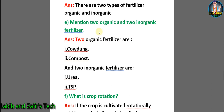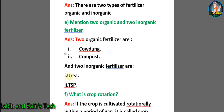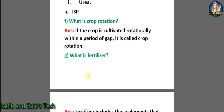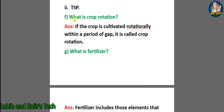Mention two organic and two inorganic fertilizers. Two organic fertilizers are: 1. cow dung, 2. compost. Two inorganic fertilizers are: urea and TSP. F: what is crop rotation? Answer: if the crop is cultivated rotationally within a period of gap, it is called crop rotation.